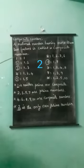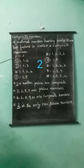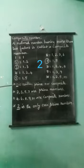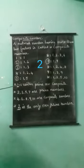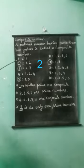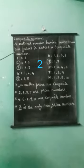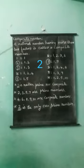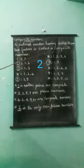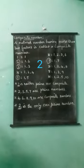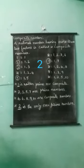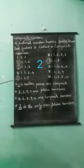So here, 1 equals 1, so 1 is neither prime nor composite. The rule states a natural number having more than 2 factors is called a composite number. More than 2 means 3 or more. Here, only one factor is present for 1, so 1 is neither prime nor composite. Understood?